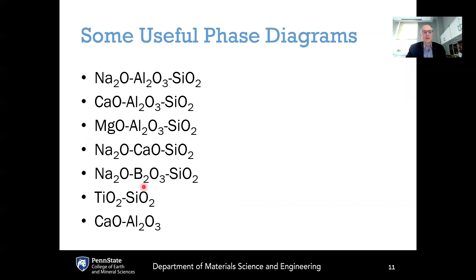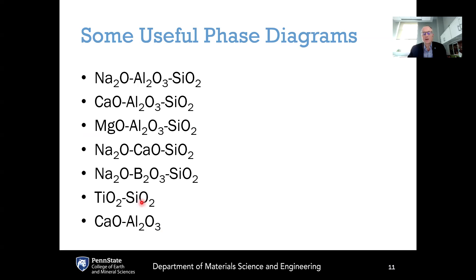Some of the most useful phase diagrams for glass manufacturing include the sodium aluminosilicate phase diagram — the basis for most chemically strengthened glasses. The calcium aluminosilicate phase diagram is the basis for most display glasses, and magnesium aluminosilicate is also useful for display glasses. Soda lime silicate is for soda lime glass. Sodium borosilicate is the basis for Pyrex and other borosilicate glasses. The titanium–silica phase diagram is important for ultra-low expansion (ULE) glass with a zero thermal expansion coefficient. The calcium aluminate phase diagram is useful for high-modulus calcium aluminate glasses.